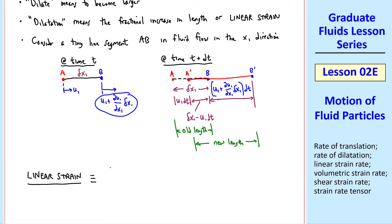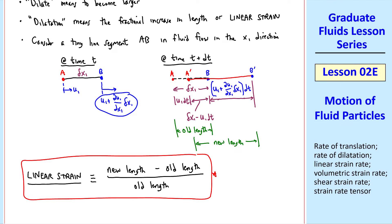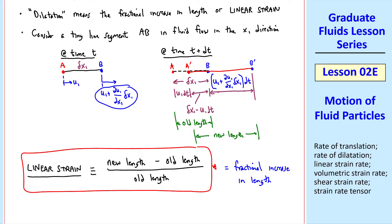Now let's define linear strain as the new length minus the old length divided by the old length. This is a non-dimensional quantity since length appears on the numerator and denominator. This is also the fractional increase in length that we call the dilatation. And this is only in the x1 direction.